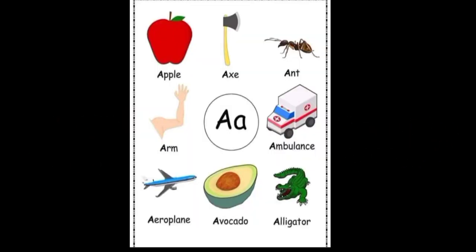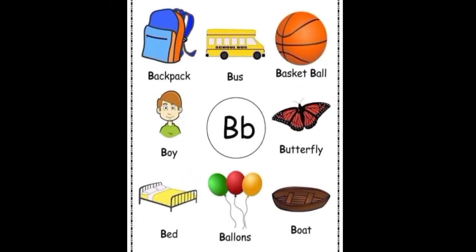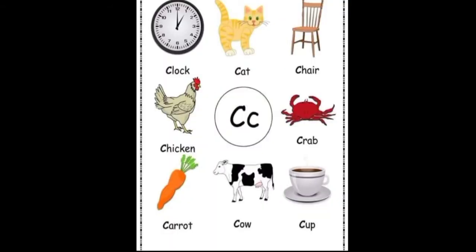A: apple, ant, ambulance, arm, aeroplane, avocado, alligator. B: bee, backpack, bus, basketball, boy, butterfly, bed, balloons, boat. C: clock.